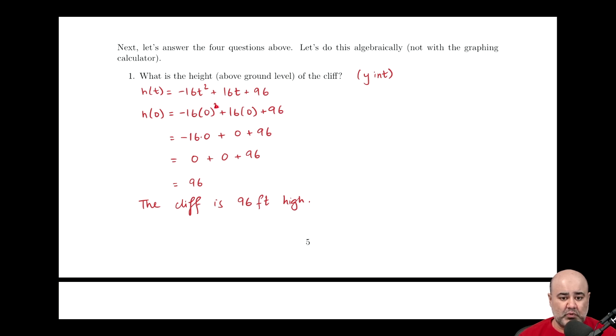So that comes along for the ride. Now here we know that 0 squared is 0, so that's the simplification I did here. We know that 16 times 0 is 0. That's where we got that from. And then finally, 96 is just coming along. I'm doing one more computation here. Negative 16 times 0 gives us 0. And then finally, 0 plus 0 plus 96 yields 96.